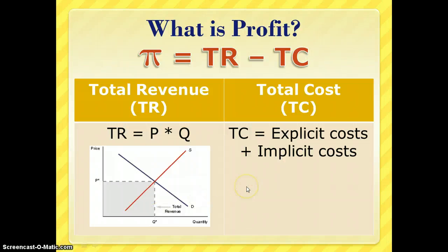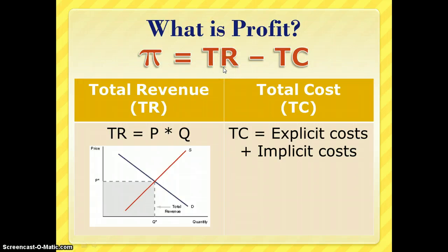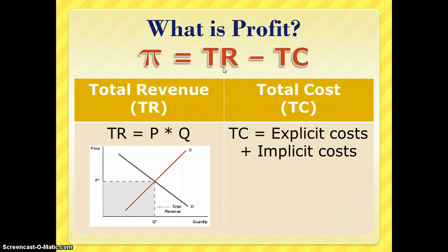Total cost is going to be the sum of explicit and implicit costs. When we take total cost and subtract it from total revenue, if the number is positive we say there was a positive accounting profit; if it's negative, we say we have a loss.